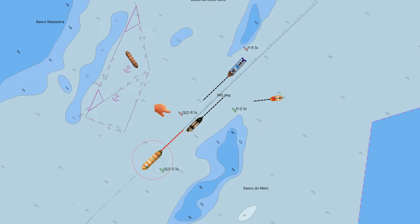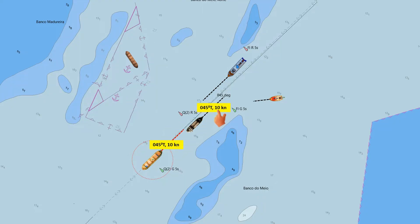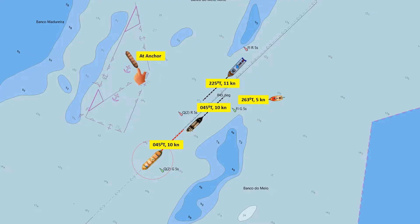Let's consider this scenario. Our ship is navigating a two-way traffic lane on a course of 045 degrees true, traveling at a speed of 10 knots. The vessel ahead of us is on the same course and speed. Another ship is moving on a reciprocal course of 225 degrees true at 11 knots. This boat is proceeding on a course of 263 degrees true at 5 knots, and a fourth vessel is anchored. Additionally, buoys are positioned on both sides of the two-way traffic lane.